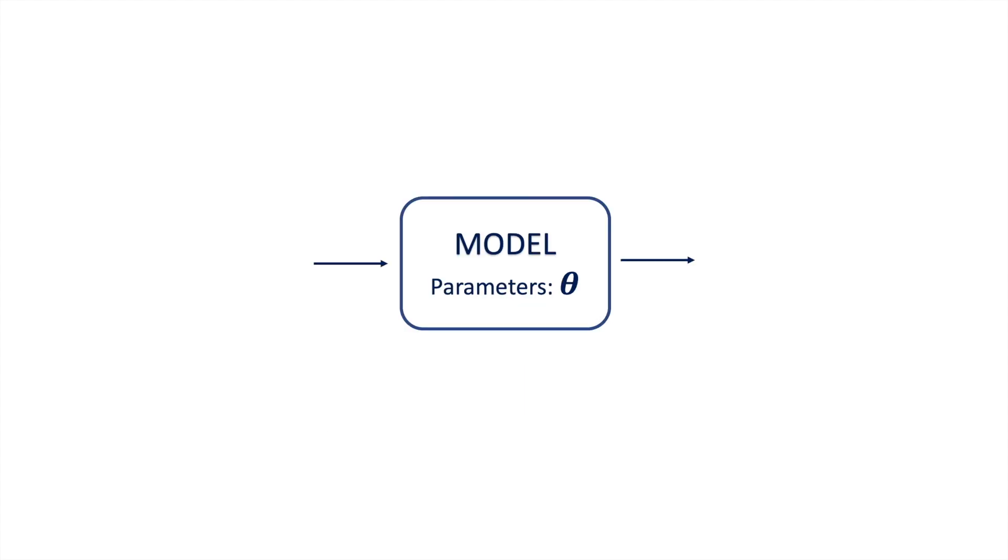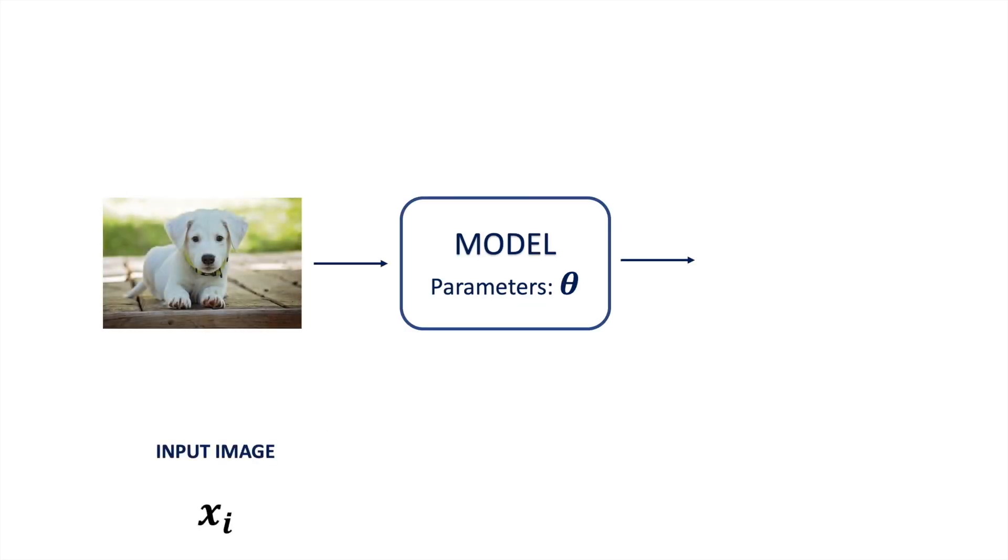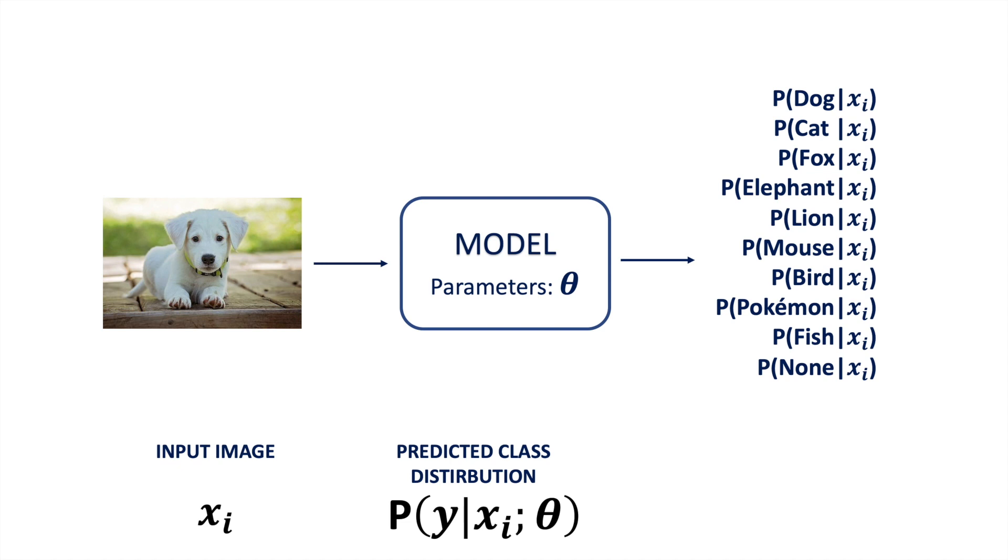Returning to the model setup, the input to the system is an input image x_i, and the output is the probability distribution over the different animal classes P(y|x_i). If we assume that we have the labels of the true underlying distribution, P*(y|x_i), we can try to optimize the parameters theta of the system, such that the model distribution matches the true distribution as closely as possible.